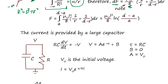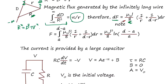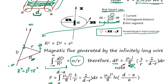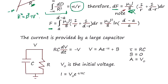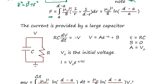Many internet sources miss this factor-of-2 correction. The total force is then integrated from A to D minus A, giving the final force equation for the railgun.